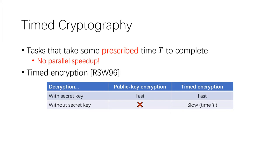In a timed encryption scheme, if you have the secret key, similar to public key encryption, you can still decrypt fast. But the difference is that even without the secret key, you can still decrypt — however, this decryption process will take the prescribed time T to complete.